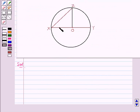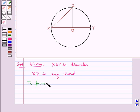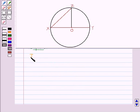This is the figure given to us in which we are given that XOY is the diameter of the circle. For example, XZ is any chord of the circle and we need to prove that XY is greater than XZ. First, we consider triangle XOZ.